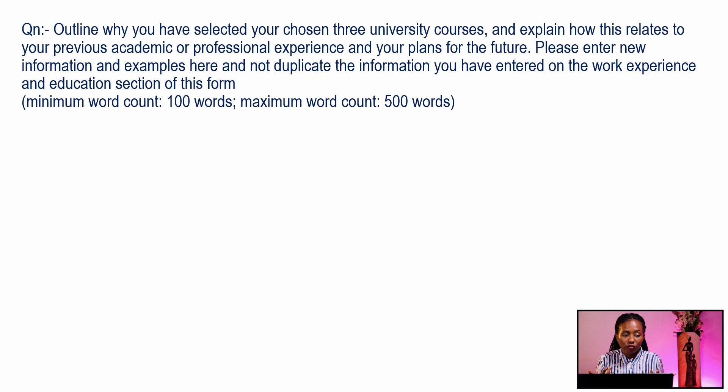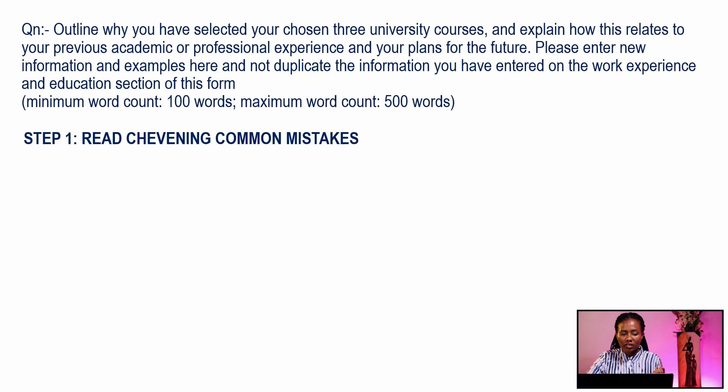We'll start by going through the question. The question posed to us is: outline why you have selected your chosen three university courses and explain how this relates to your previous academic or professional experience and your plans for the future. Please enter new information and examples here and not duplicate information from the work experience and education sections. The minimum word count is 100 words, maximum 500 words.